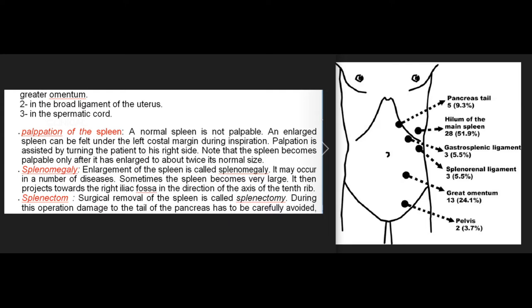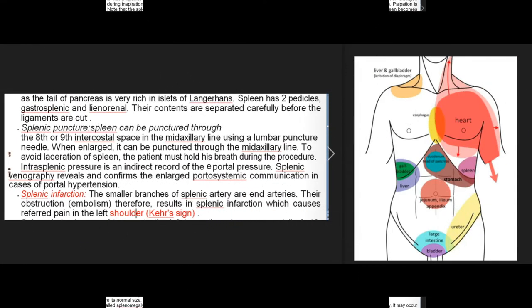Splenectomy: surgical removal of the spleen requires careful avoidance of damage to the tail of the pancreas, which is rich in islets of Langerhans. The spleen has two pedicles — gastrosplenic and lienorenal — whose contents must be identified before the ligaments are cut. Splenic puncture: the spleen can be punctured through the 8th or 9th intercostal space in the midaxillary line using a lumbar puncture needle. The patient must hold their breath to avoid laceration. Intrasplenic pressure is an indirect record of portal pressure.